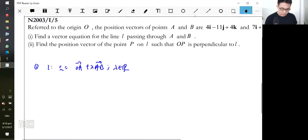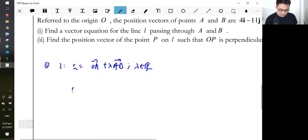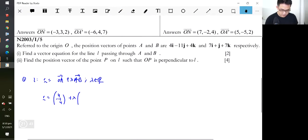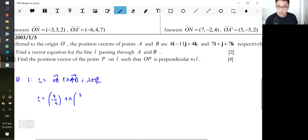You should get the whole two marks. So this is r = (4, -11, 4) + λ... 7 minus 4 which is 3, 1 minus (-11) is 12, 7 minus 4 is 3. AB is not wrong if you put it as (3, 12, 3).